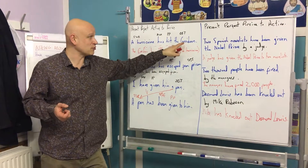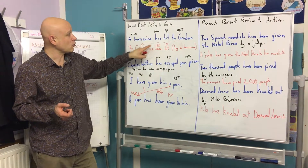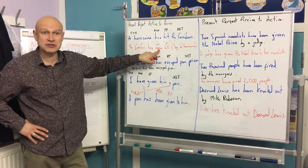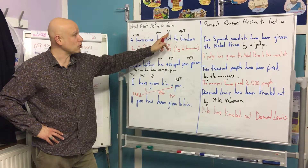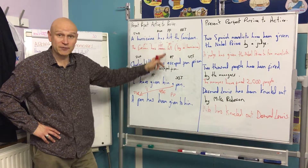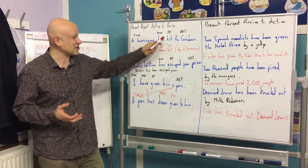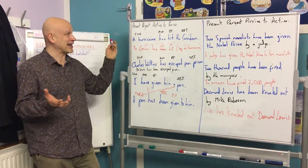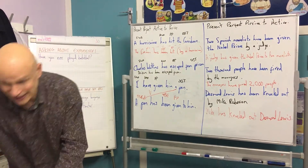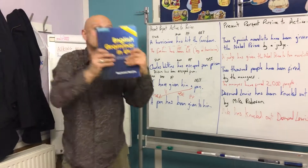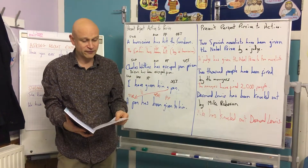The passive is where we move the object to the subject. We leave the auxiliary verb but we add the verb to be, also in the past participle, and then we ensure that the main verb is in the past participle — and with the present perfect it already is, so we don't need to do much to make an active sentence passive. Learn these and do the units in English Grammar in Use: units 42, 43, and 44.